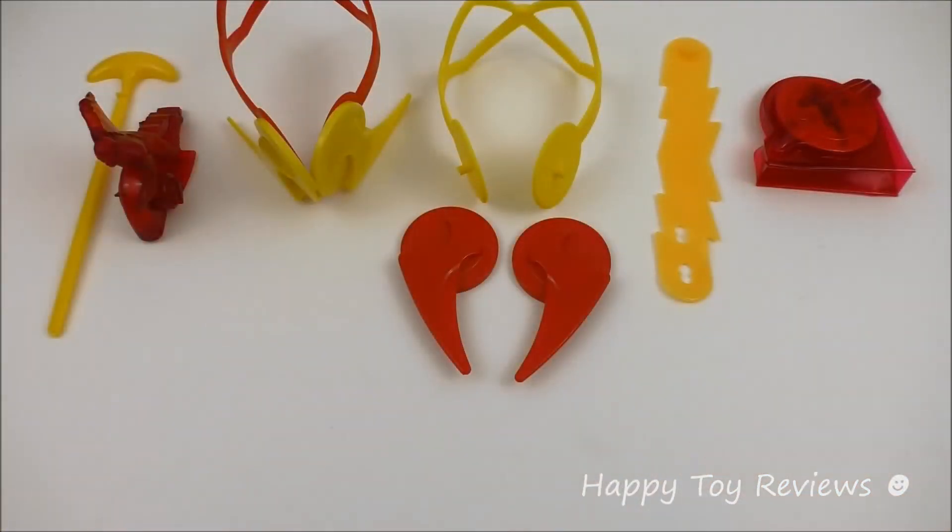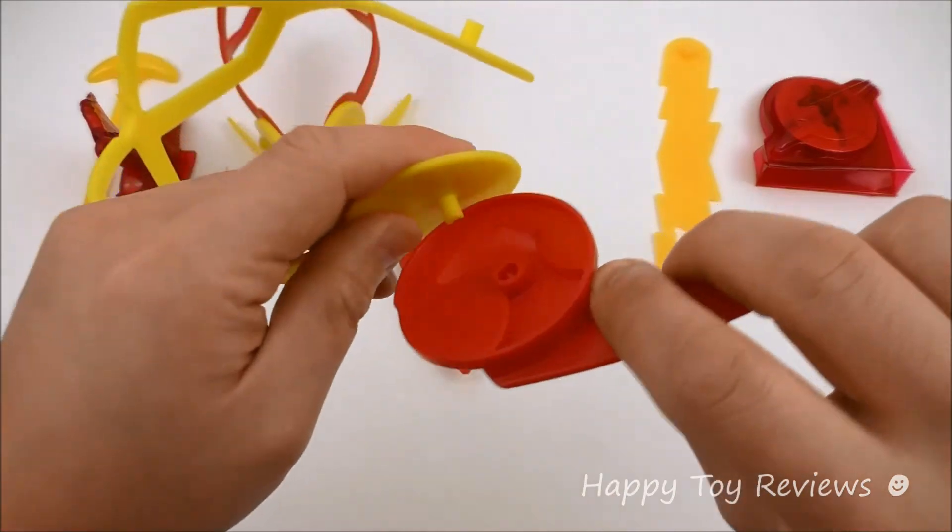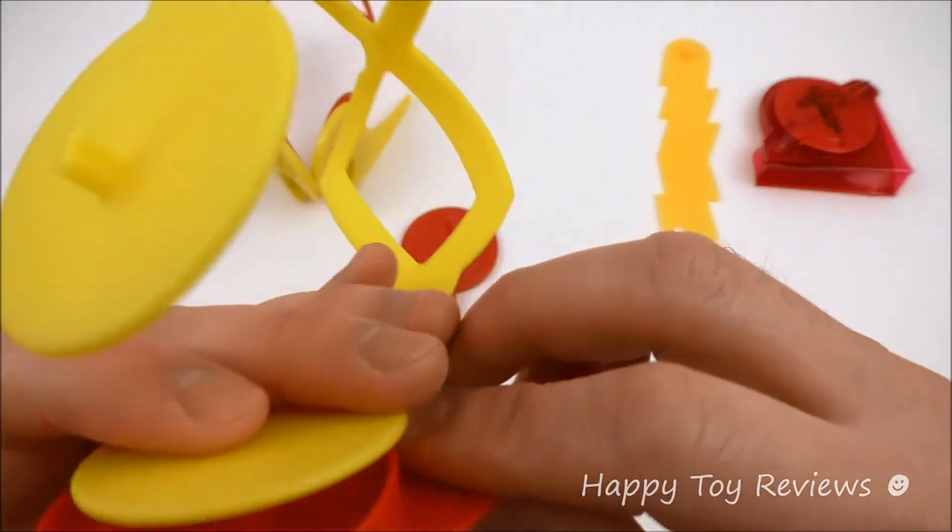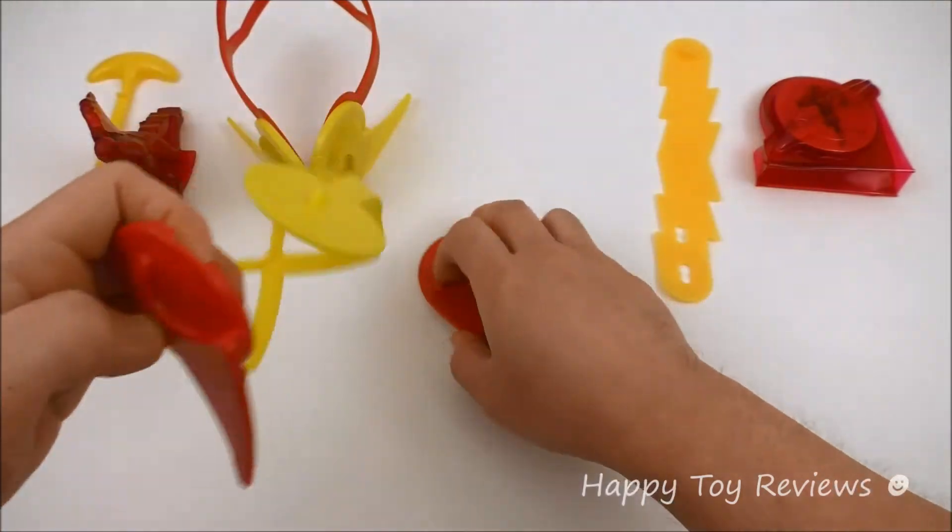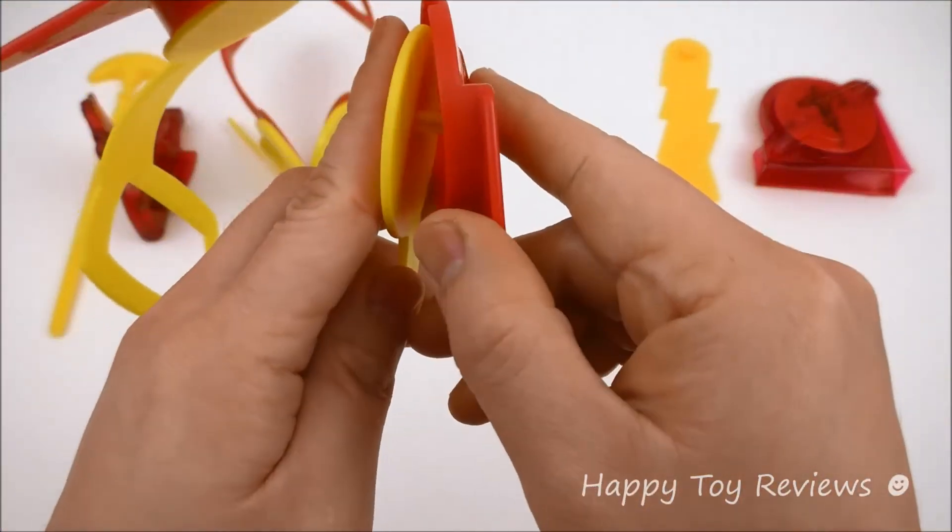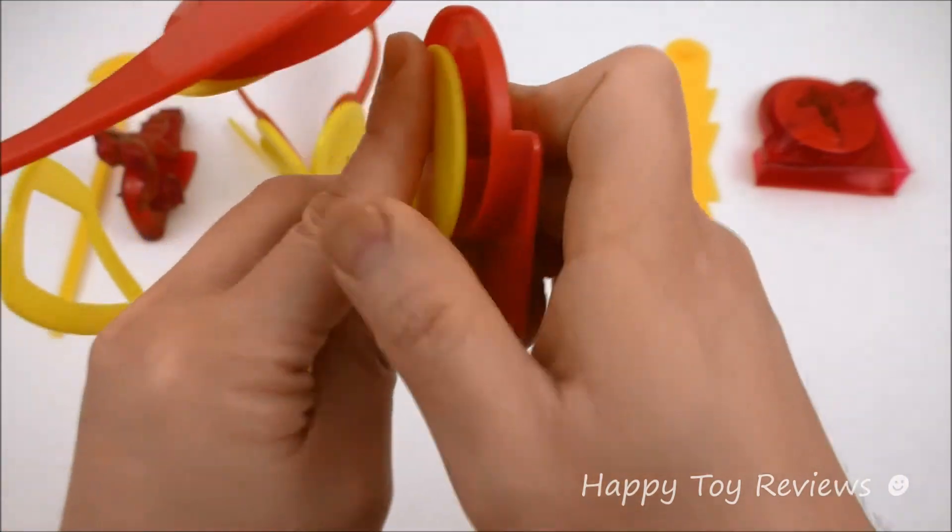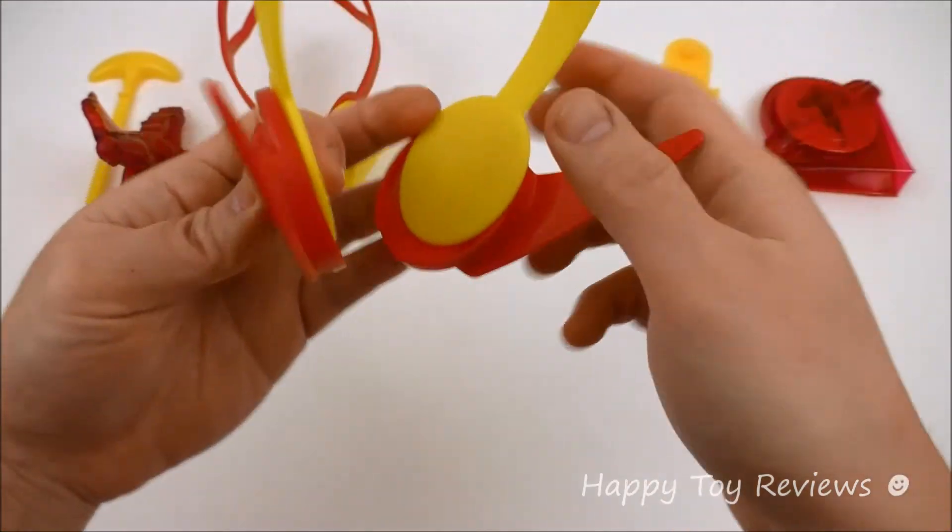Toy number three is the Reverse Flash Mask. So the colors are actually reversed on this one. So what you can do is you can attach it like this. And attach the same thing on this side like that. And there you go. That's the Reverse Flash Mask.